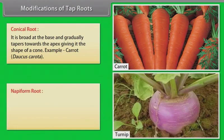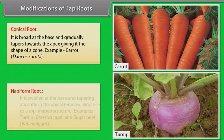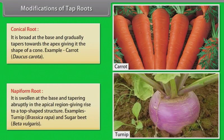Napiform root: It is swollen at the base and tapering abruptly in the apical region, giving rise to a top-shaped structure. Examples: turnip (Brassica rapa) and sugar beet (Beta vulgaris).